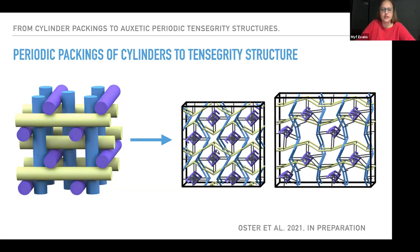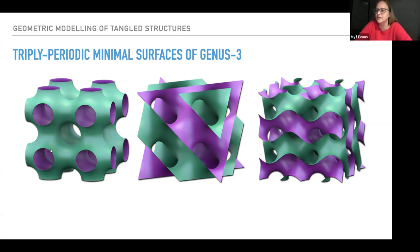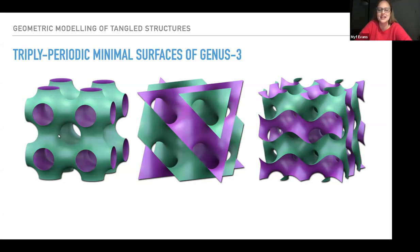I'm going to start with looking at triply periodic minimal surfaces of genus three. I've got three surfaces here. They're all minimal surfaces — they all have zero mean curvature and negative Gaussian curvature, so they're hyperbolic. All of them are periodic in three directions of space. All of these surfaces divide space into two equal channels — one side colored purple and one green — which are exactly the same for the full periodic surface.